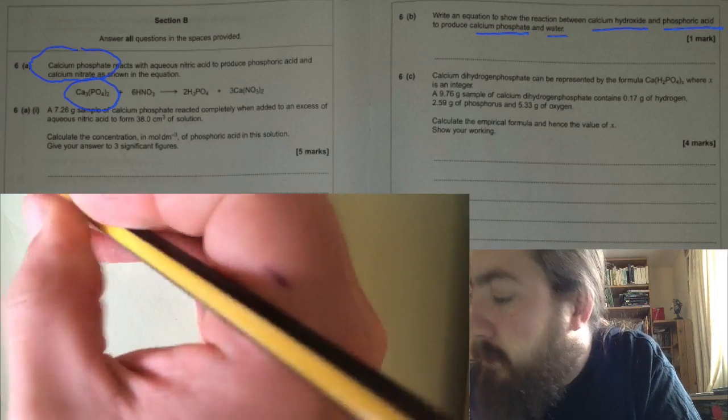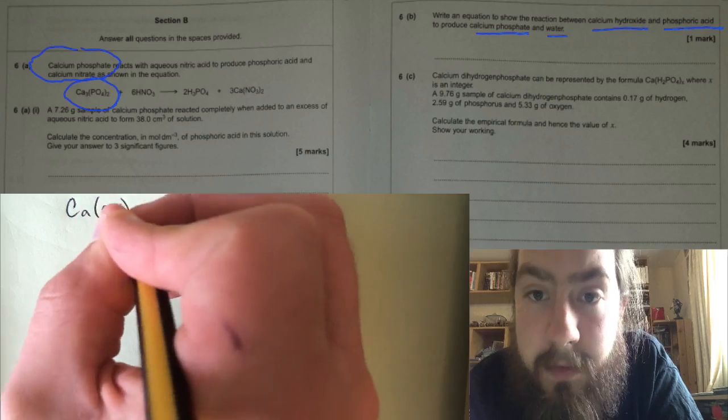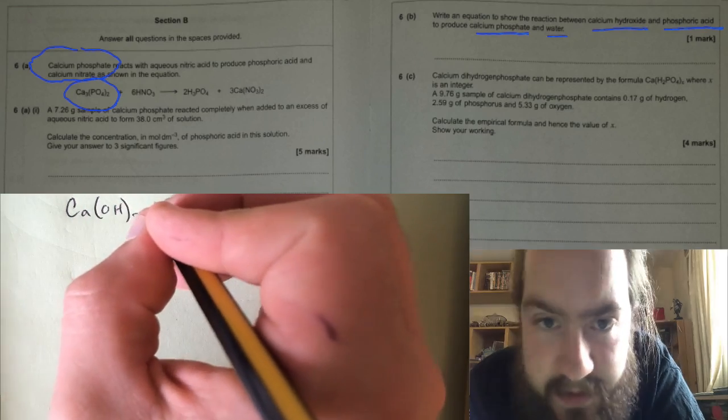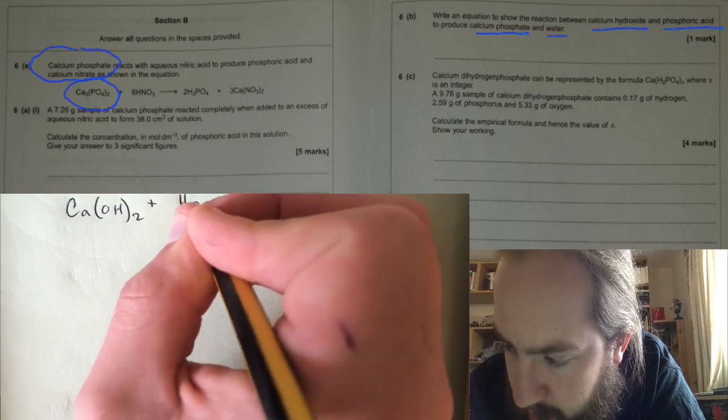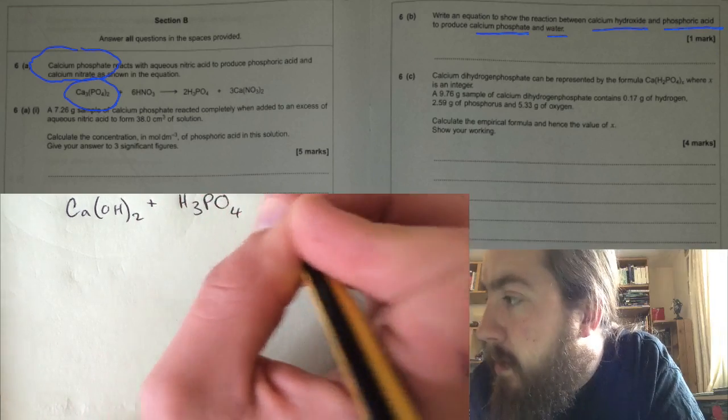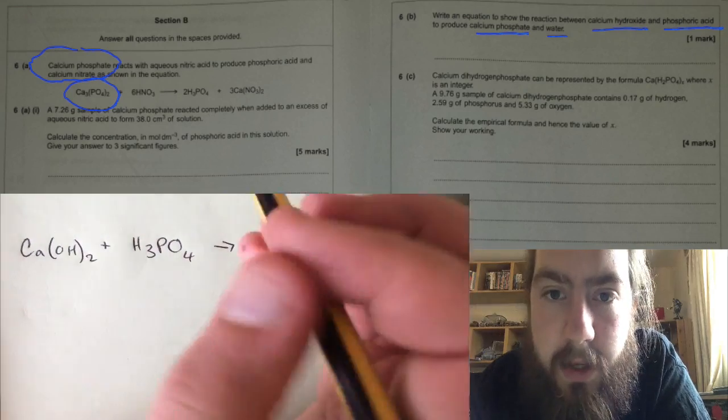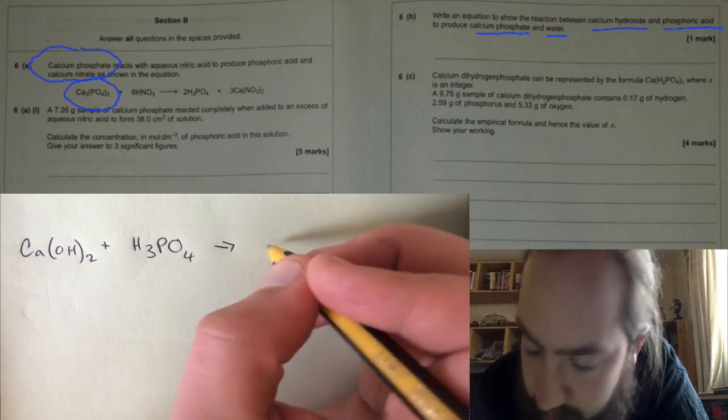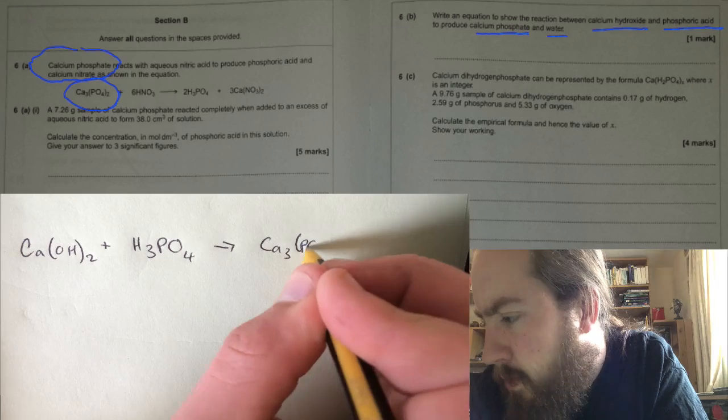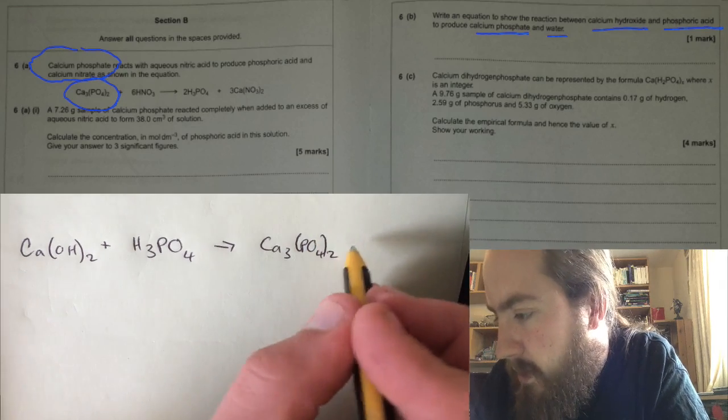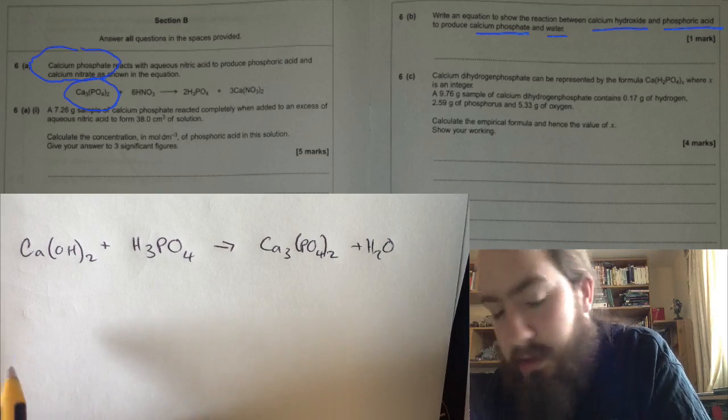So Ca(OH)₂ plus phosphoric acid, which is also given in the question, H₃PO₄, goes to make calcium phosphate, which we know from the question, Ca₃(PO₄)₂, and water, plus H₂O. This is quite a complicated equation to balance.